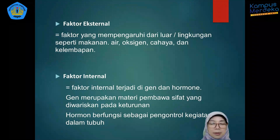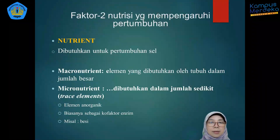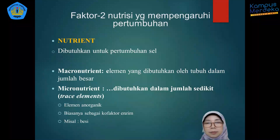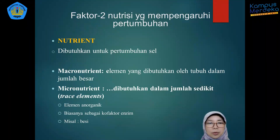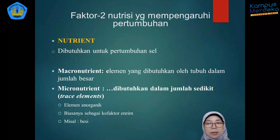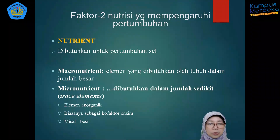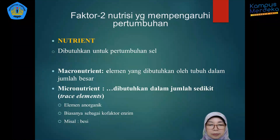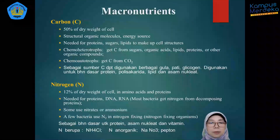Dari faktor eksternal, yang pertama kita lihat kelompok nutrisi. Berbagai bahan makanan atau bahan nutrisi yang dibutuhkan untuk pertumbuhan mikroba, terutama untuk pertumbuhan atau perbanyakan sel bakteri. Ada makronutrien dan ada mikronutrien. Makronutrien adalah unsur-unsur atau elemen yang dibutuhkan dalam jumlah relatif banyak, sedangkan mikronutrien adalah yang dibutuhkan dalam jumlah sedikit, atau dikenal dengan istilah trace element. Ini dibutuhkannya dalam jumlah kecil, tetapi tetap harus tersedia.